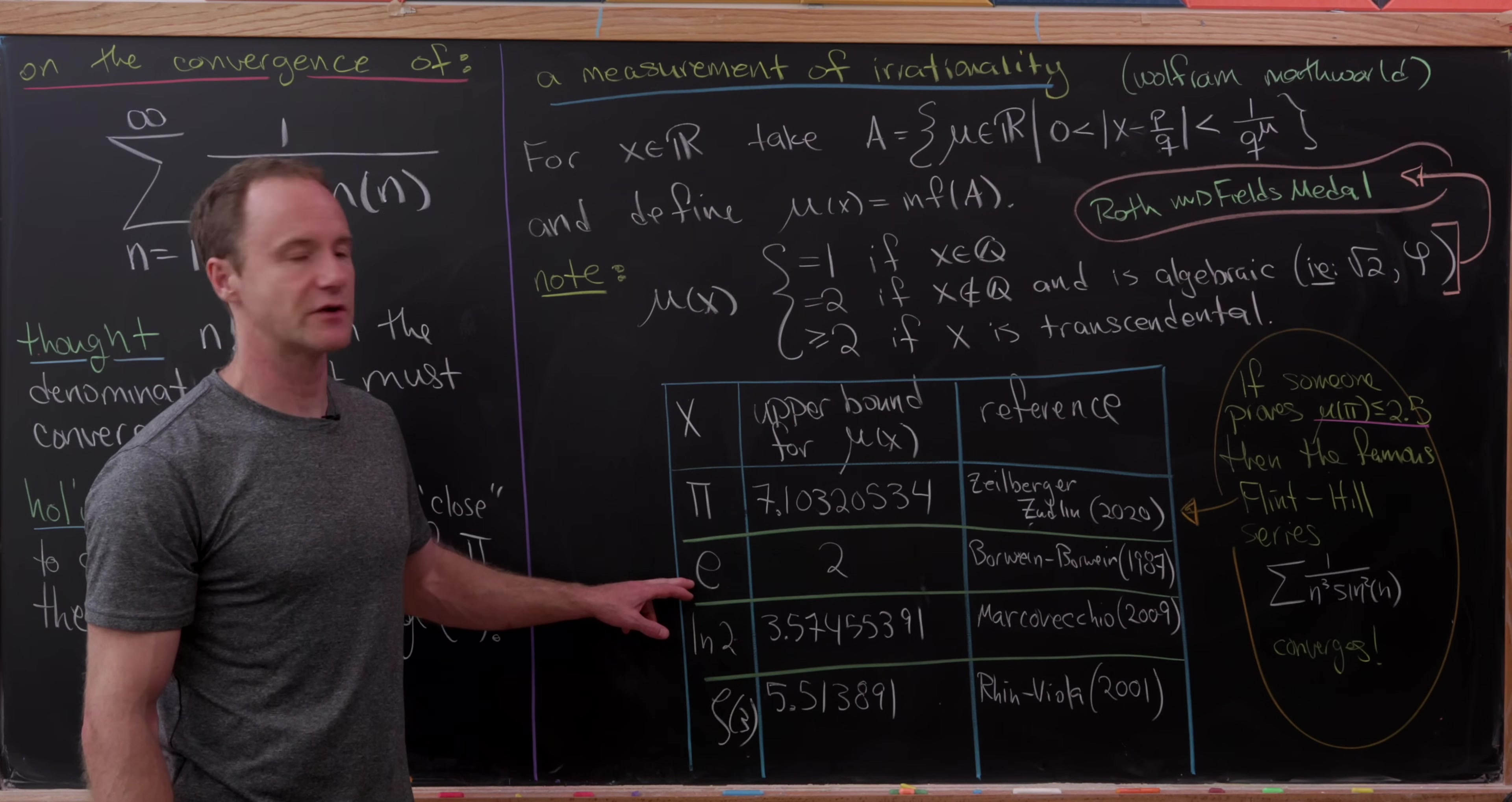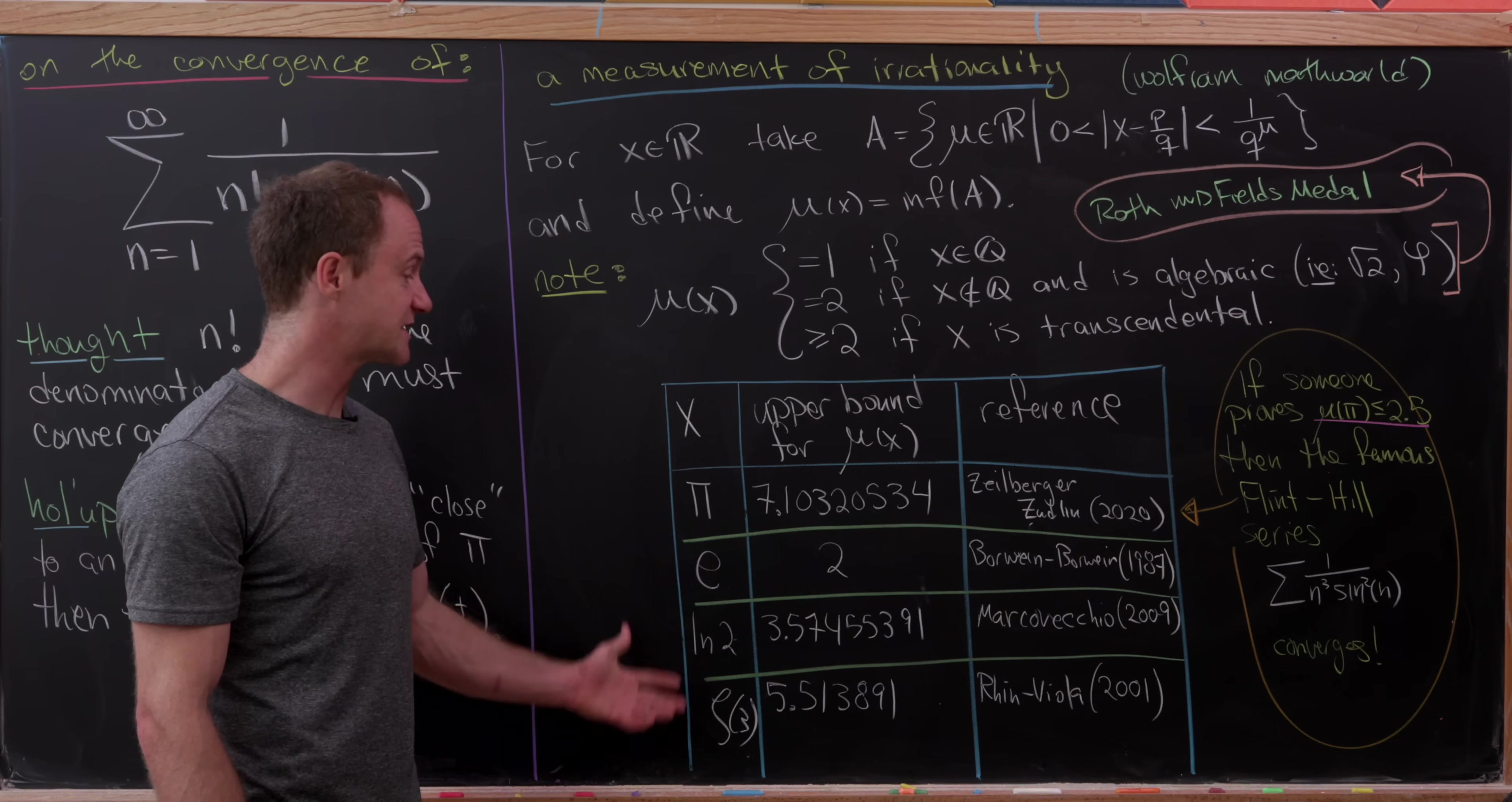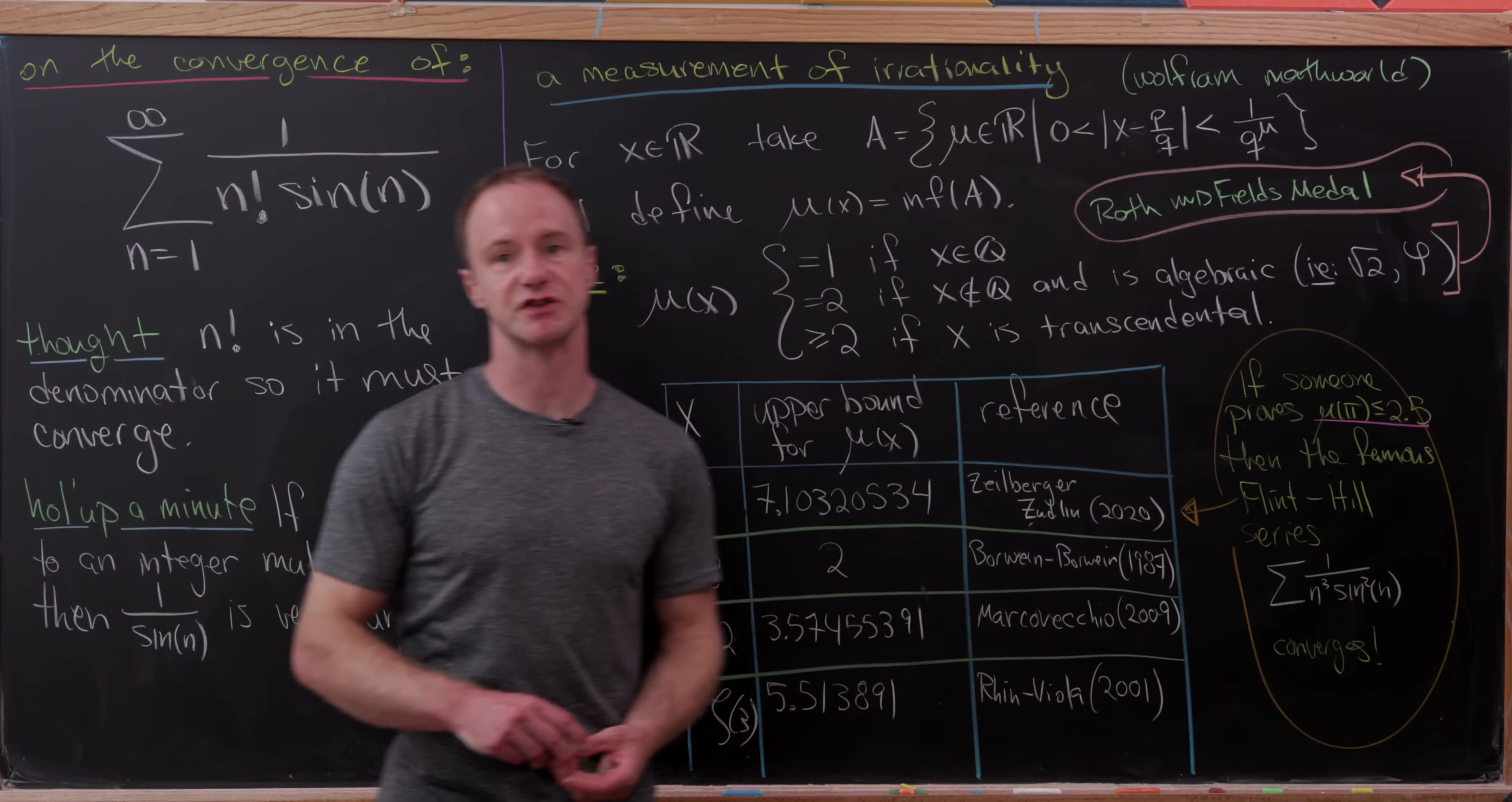Here are some others. The irrationality measure of e is 2—the upper bound is 2, but the smallest it can be is also 2, so it equals 2. Here's one for the natural log of 2 and one for the zeta function evaluated at 3. I would have liked to prove this irrationality measure for pi, but it turns out quite hard. The earliest proof was very technical, so we'll just use this result to determine if our series converges or diverges.